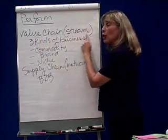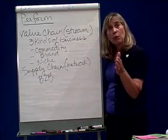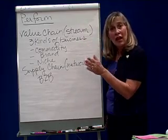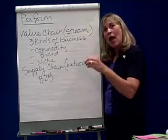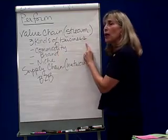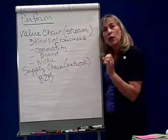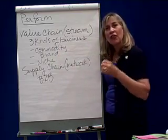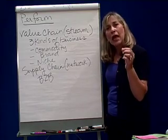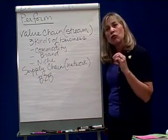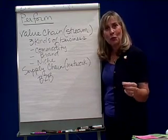When you break the value chain down, you break it down by primary processes and support services. Now, there are three kinds of businesses, and you really have to think about what kind of business you're in, because that drives how you run your business.